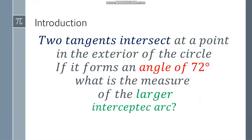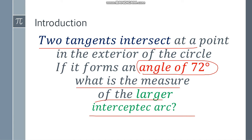Two tangents intersect at a point in the exterior of the circle and it forms an angle of 72 degrees. We are asked what is the measure of the larger intercepted arc? So how are we going to solve this?